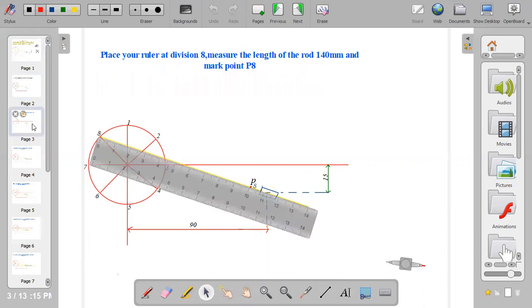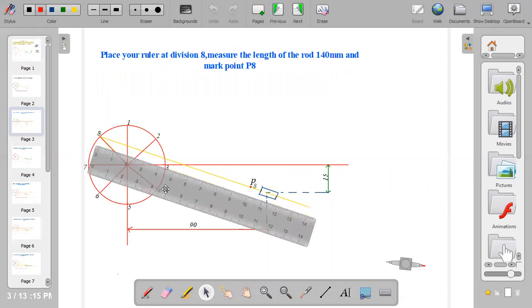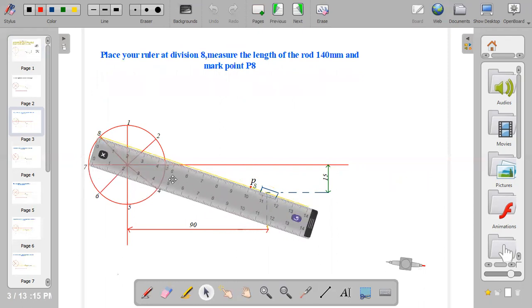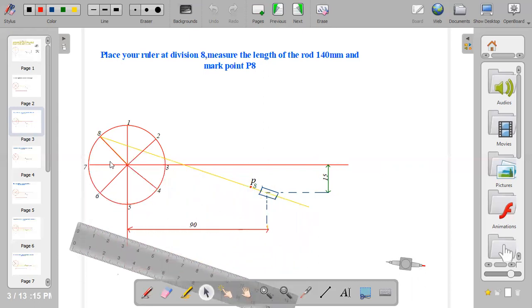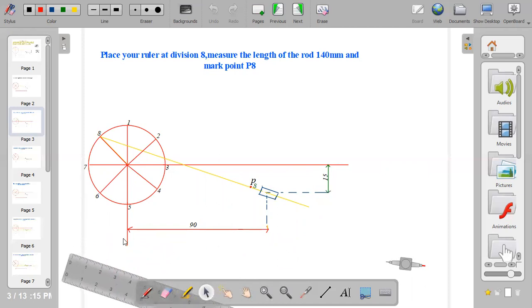When you are done with that, place your ruler at division 8 and bring out the rod. The rod is positioned at 15mm from the center line. From the center line, locate a distance of 15mm, and from the center line to the center line of the circle, locate a distance of 90mm. The point of intersection between the 90mm and the 15mm is where you fix the pivot. Measure 15mm from the horizontal line downward and 90mm from the vertical line forward.